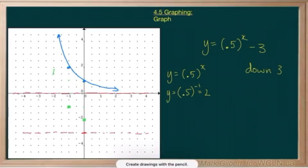Our graph now looks like this. And the equation of the asymptote is y equals negative 3.